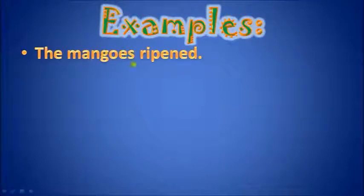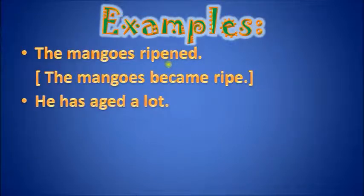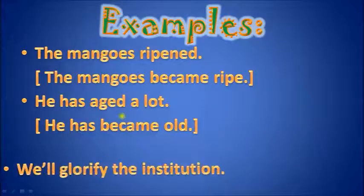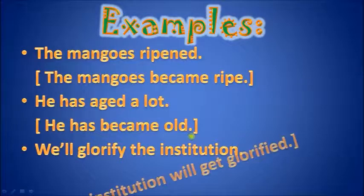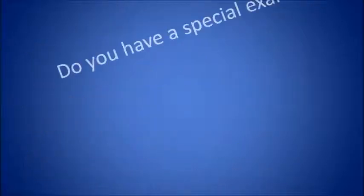Here are some examples. 'The mangoes ripened' — it means the mangoes became ripe, a change of state from green to ripe. 'He has aged a lot' — it means he has become old, also a gradual development and change of state. 'This will glorify the institution' — the institution will get glorified. These are all incoative verbs.